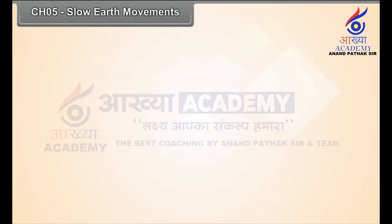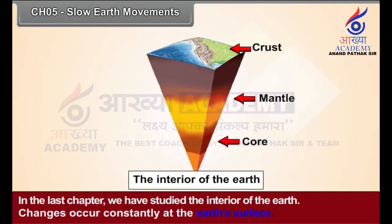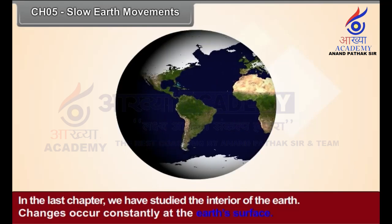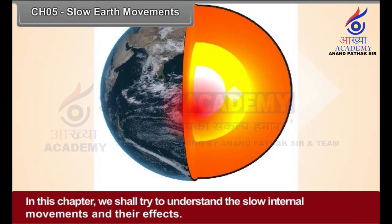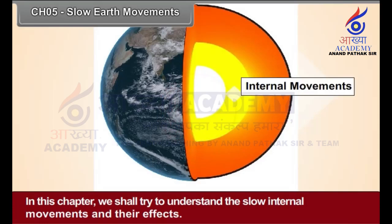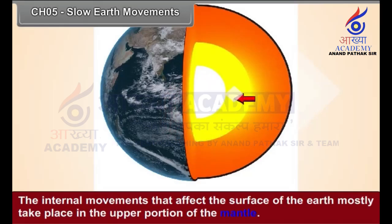Chapter 5: Slow Earth Movements. In the last chapter, we studied the interior of the earth. Changes occur constantly at the earth's surface. These changes are caused by internal movements as well as external processes. In this chapter, we shall try to understand the slow internal movements and their effects. The internal movements that affect the surface of the earth mostly take place in the upper portion of the mantle.